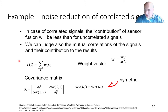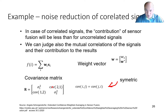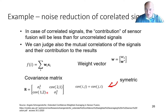We need to judge the mutual dependence of the two signals, and for this we will use the covariance matrix. Here is an example of such a covariance matrix for two signals: this is the variance of signal 1, this is the variance of signal 2, and this is the covariance between signal 1 and 2. My assumption will be that the matrix is symmetric — meaning the dependence of signal 2 on signal 1 is the same as the dependence of signal 1 on signal 2.